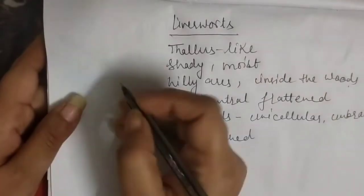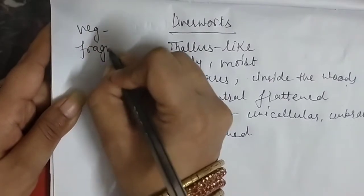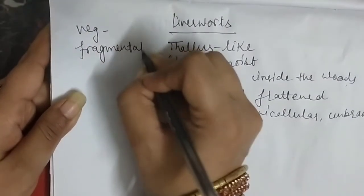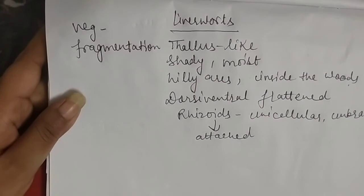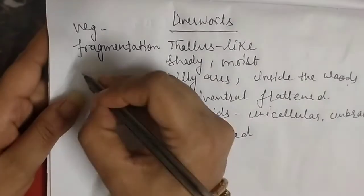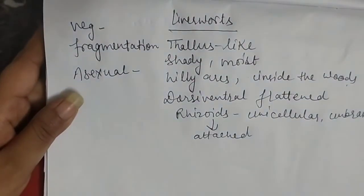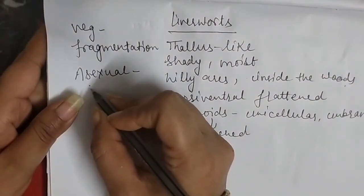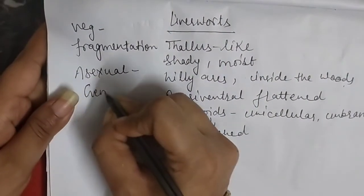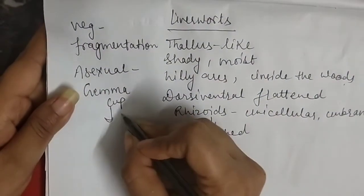One important thing about liverworts is vegetative reproduction through fragmentation — the body fragments and every fragment develops into a new organism. For asexual reproduction, a new method is present: a special structure called gemmae cups. Inside the gemmae cups, there are asexual reproductive bodies called gemmae.